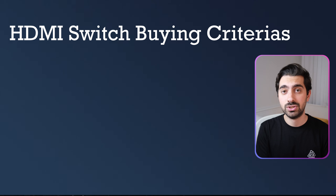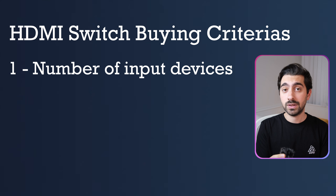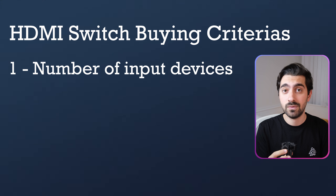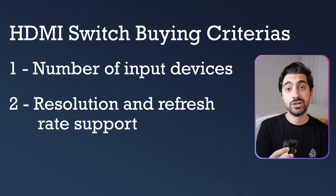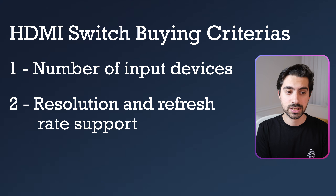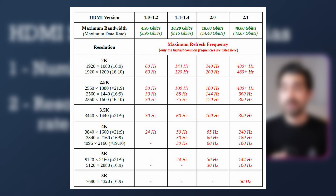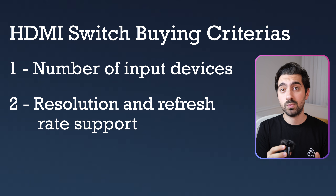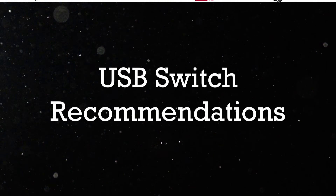When buying an HDMI switch, there are basically two criteria to decide first. The first is the number of input devices — you can connect two devices or up to 5–10, depending on the switch. The second criterion is resolution and refresh rate support. Older HDMI switches support HDMI 1.4, which only supports up to 4K 30Hz, while modern HDMI switches come with HDMI 2.0, which supports up to 4K 60Hz.